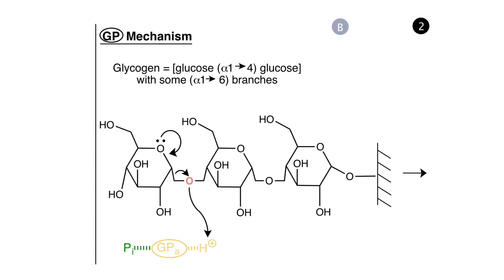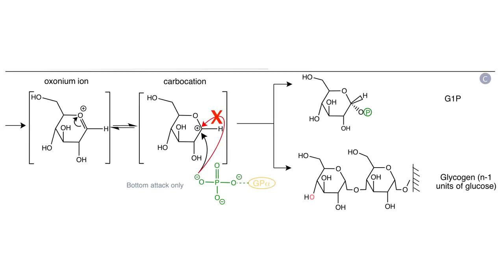Let's look next at panel B. The reaction begins with the protonation of the red oxygen between the terminal two glucose moieties by a proton on the glycogen phosphorylase enzyme. The intermediate product is a resonance-stabilized pair of positively charged species, or cations — an oxonium ion at the 1' oxygen, and a carbocation at the 1 carbon. The electrophilic carbocation is attacked by the negatively charged phosphate residue, non-covalently associated with glycogen phosphorylase, to form glucose 1-phosphate.